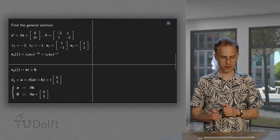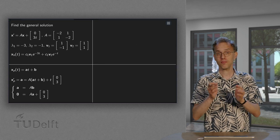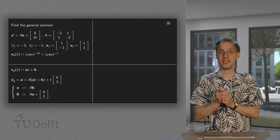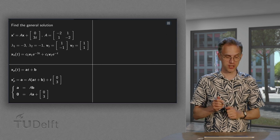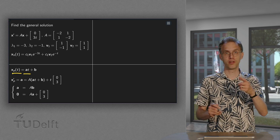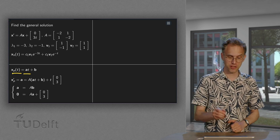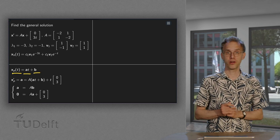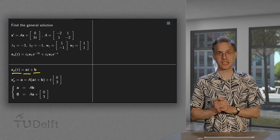Well, we have something of the form of a vector times t. So, what would be a good trial solution as a particular solution? Some unknown vector times t. Well, if we go to differentiate that, we will get constant vectors. So, some other unknown constant vector is added.